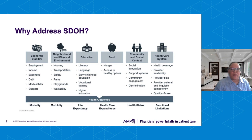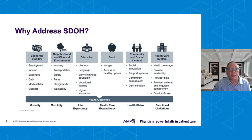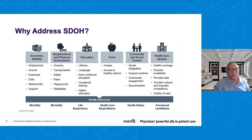This slide shows specific domains within these different areas. For example, economic stability could include employment, income, expenses, debt, medical bills, and support. These domains — including neighborhood and physical environment, education, food, community and social context, and health care system — can impact health outcomes such as mortality, morbidity, life expectancy, health care expenditures, health status, and functional limitations.